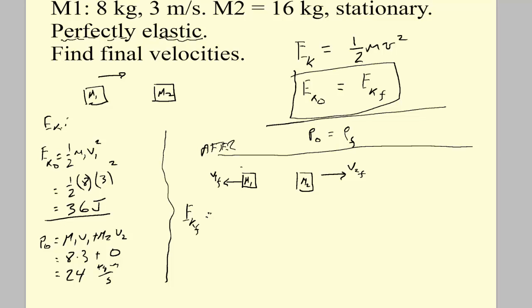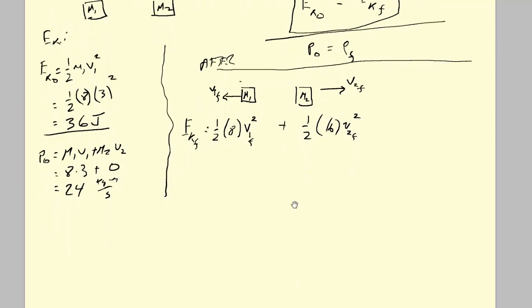So the kinetic energy now is here and here. It's 1/2 M1 (8) V1 final squared plus 1/2 M2 (16) V2 final squared. That's the kinetic energy of M1 plus the kinetic energy of M2. You'll be really depressed to see that there are two unknowns and they're squared. Yes, it's this bad.